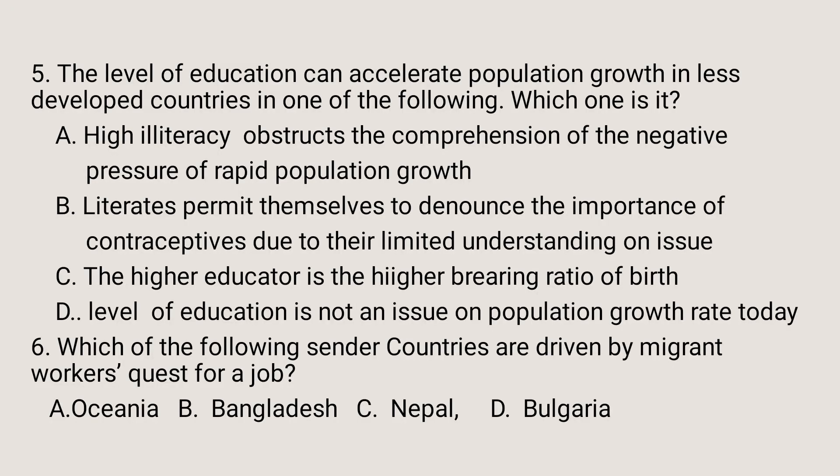Question number 5. The level of education can accelerate population growth in less developed countries in one of the following ways. Which one is it? A. High illiteracy obstructs the comprehension of the negative pressure of rapid population growth. B. Literates permit themselves to denounce the importance of contraceptives due to their limited understanding on the issue. C. Higher education leads to higher birth ratios. D. The level of education is not an issue on population growth rate today. The answer is A.